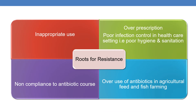Now let us discuss the routes of resistance. Some of the core reasons for antibiotic resistance are inappropriate use by patients and overprescription by doctors, poor infection control in healthcare settings — that is poor hygiene and sanitation — non-compliance to antibiotic course by patients, and overuse of antibiotics in agricultural feed and fish farming.